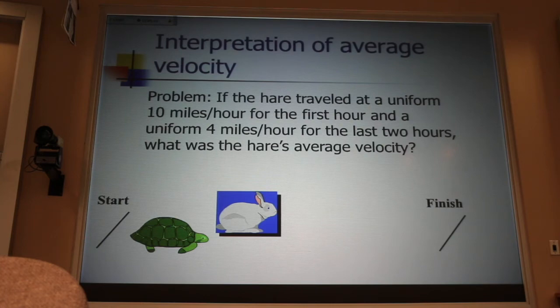Well, 10 and 4, if I take the average of 10 and 4, that's 10 plus 4 is 14 divided by 2, 7. The average velocity would be 7 miles per hour. Why is that not only wrong, but sick and wrong?